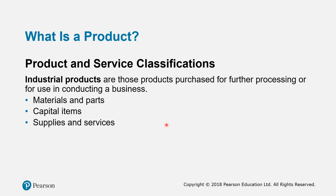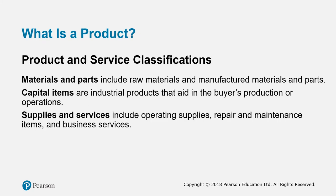Industrial products are those purchased for further processing or use in conducting a business. This includes materials and parts, capital items, and supplies and services. Materials and parts include raw materials, manufactured materials, and parts. Capital items include industrial products that aid in the buyer's production or operations, such as machinery and technology. Supplies and services include operating supplies like cleaning, servicing, and repair services.